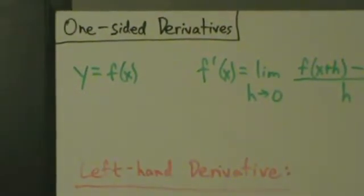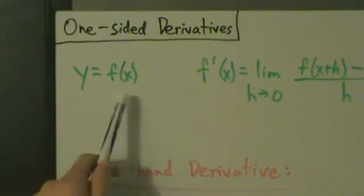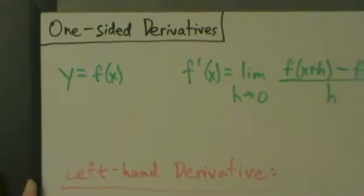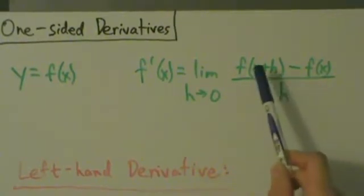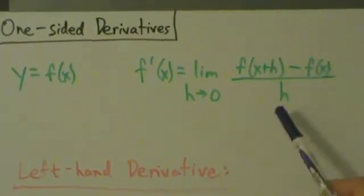This video introduces one-sided derivatives. If we have a function y equals f of x, then we know the derivative is f prime of x equals the limit as h goes to zero of f of x plus h minus f of x all divided by h.